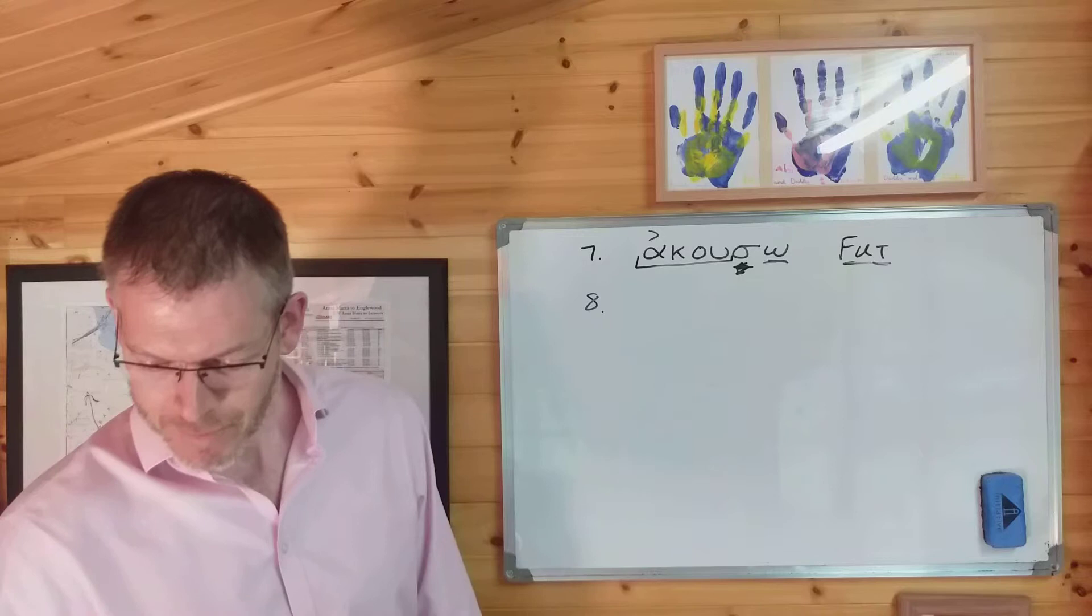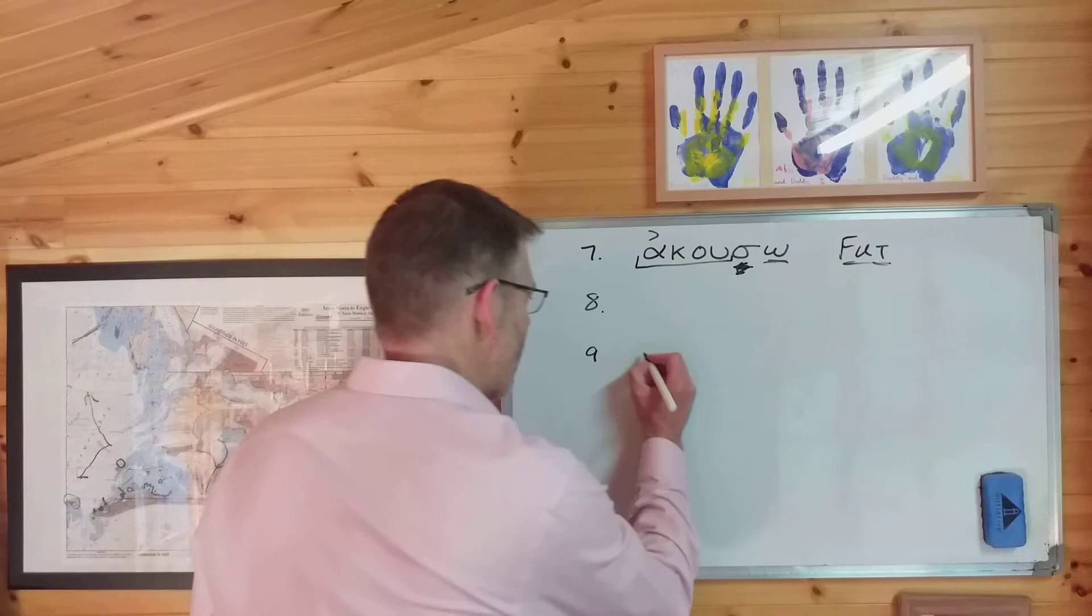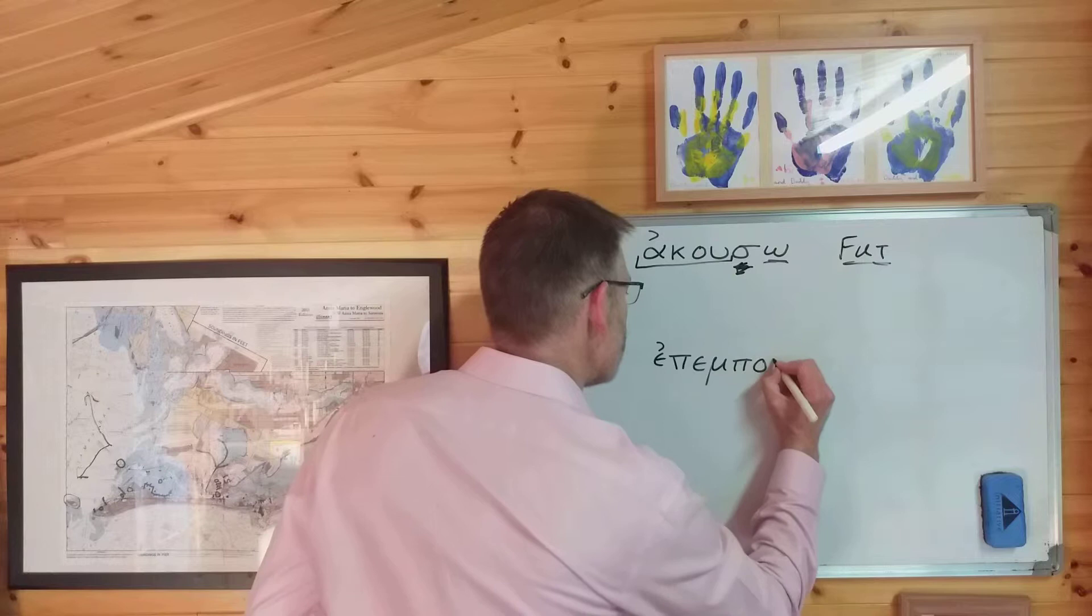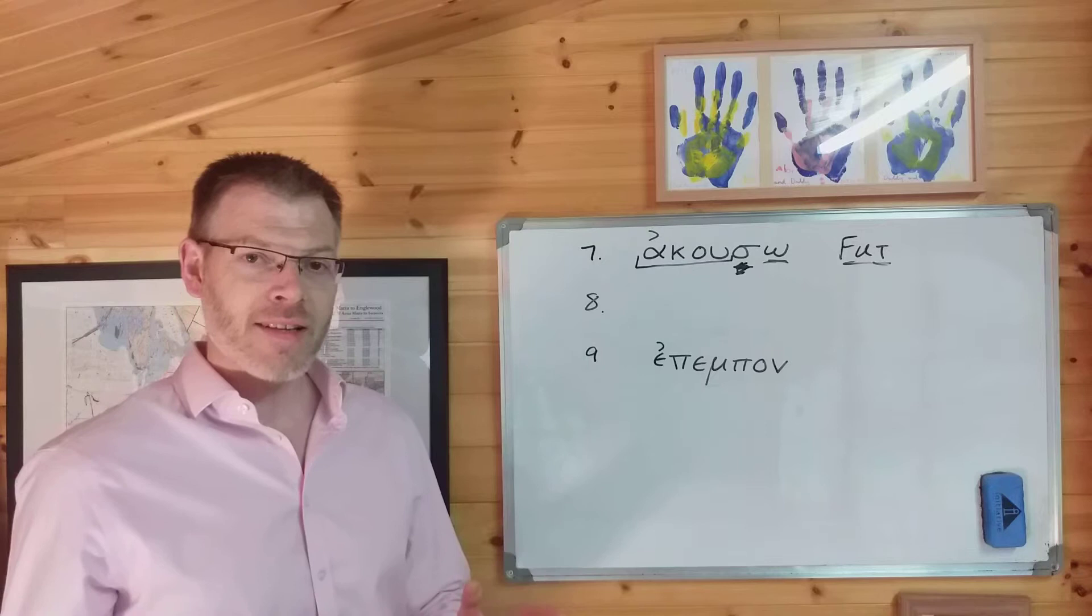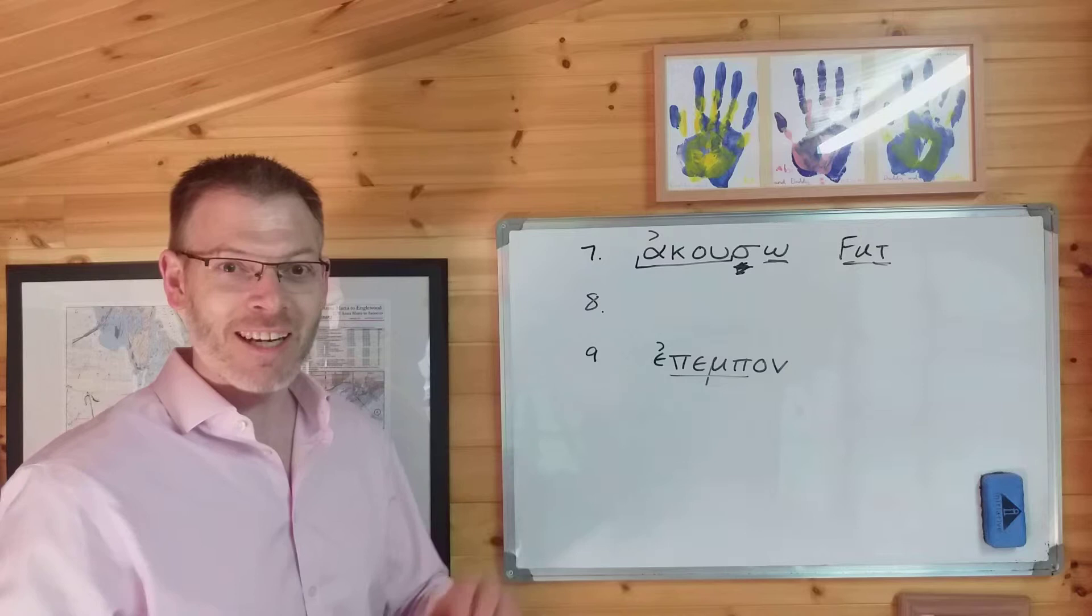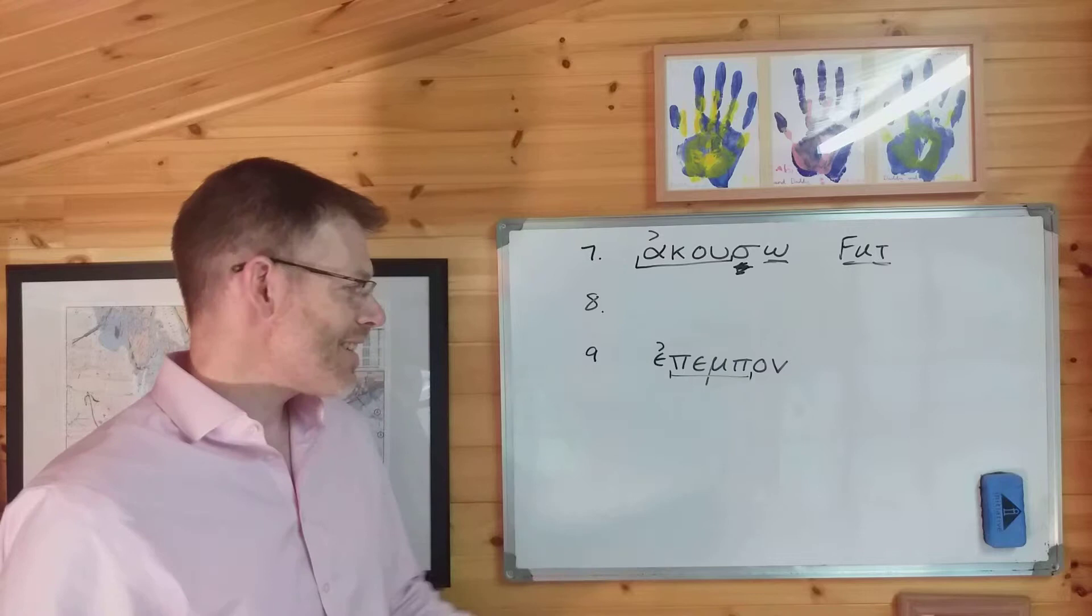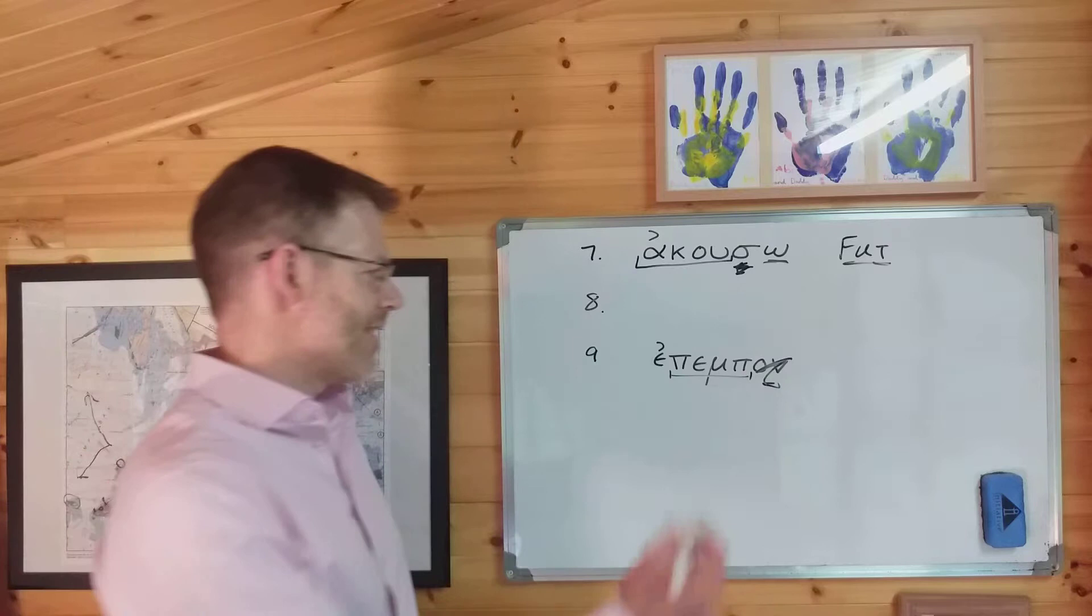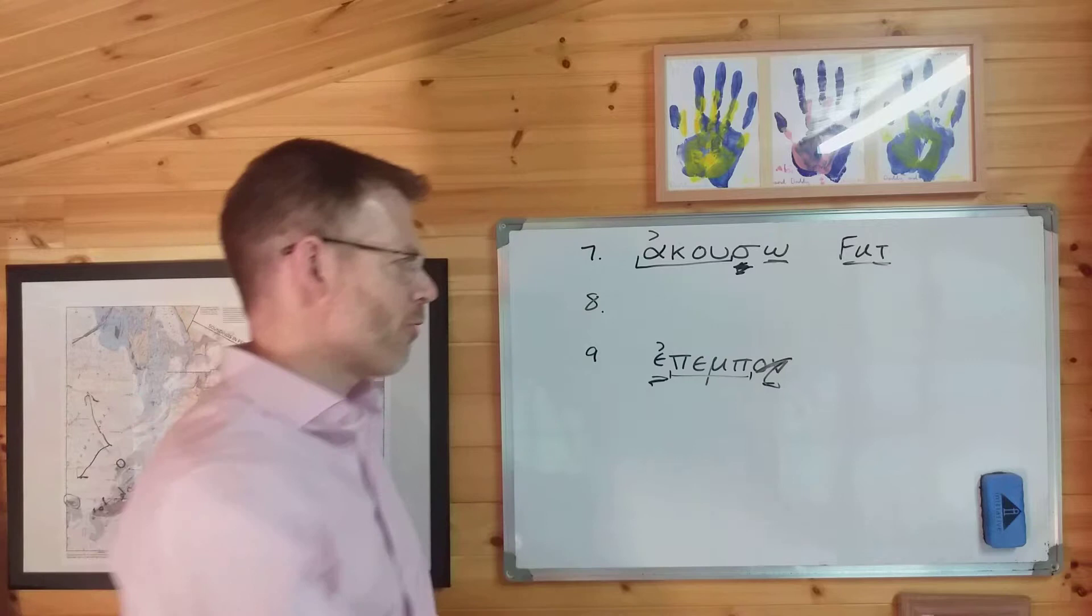Number nine. I'll just do one more. Epempon. Where's the stem? Find it? You've got to learn your vocab. You really do need to learn your vocab, otherwise you're not going to be able to spot the stem among the clutter of everything else. So pemp is the stem from pempo, meaning I send. Is there a sigma suffix? Is there an epsilon augment? Yes to the epsilon augment. No to the sigma suffix. So if it's got an epsilon augment and no sigma suffix, it is in the imperfect.